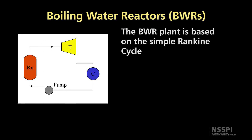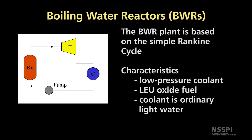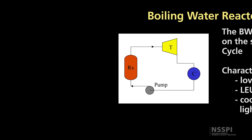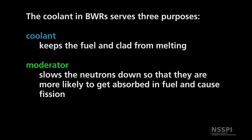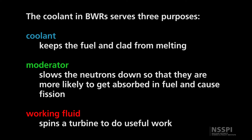The BWR, or boiling water reactor, is a very simple reactor type. The reactor produces steam, that steam drives a turbine, the steam then gets condensed in a condenser and pumped back through the reactor. The thermodynamic loop for it is very simple. This reactor operates off of a low pressure light water coolant and uses a low enriched uranium oxide fuel. The coolant itself serves three purposes: it cools the fuel and cladding so the fuel doesn't melt; it acts as the moderator that slows neutrons down so they can cause fission; and it is the working fluid that spins the turbine and produces electricity.